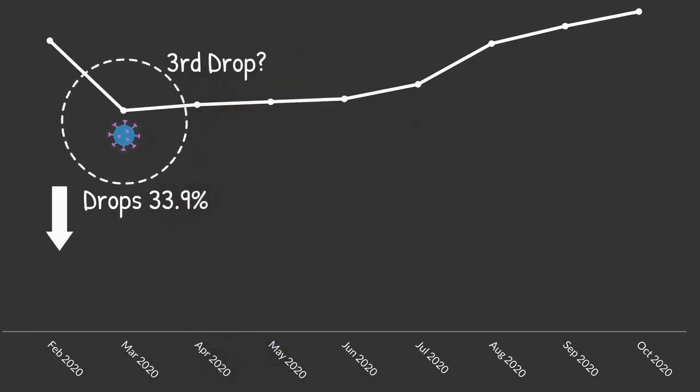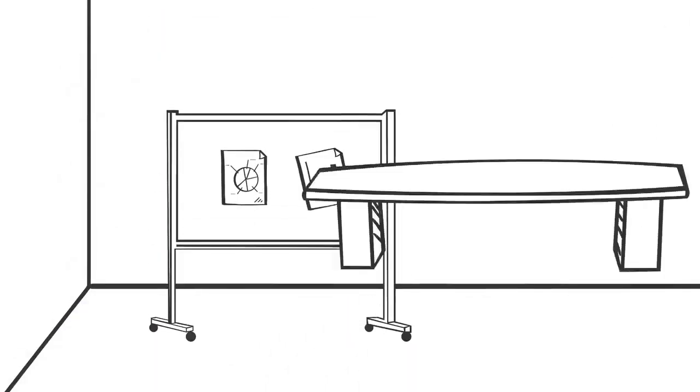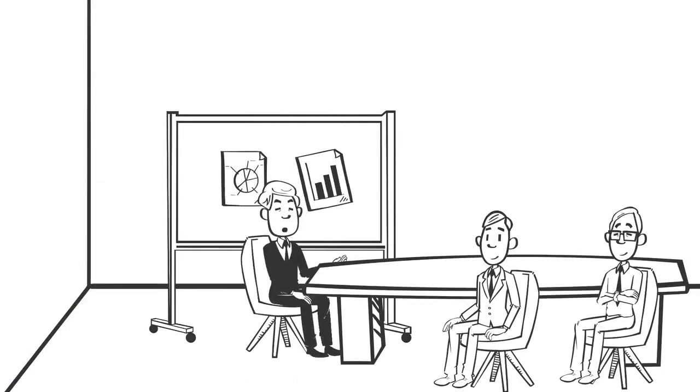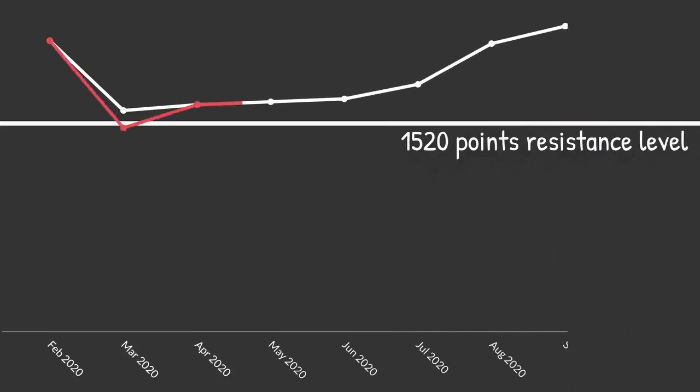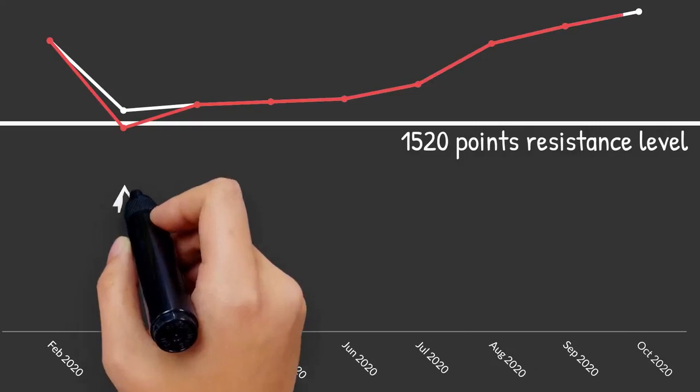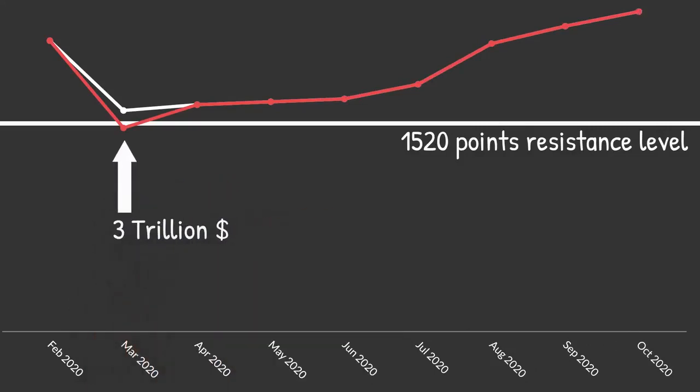So the question becomes, was this the third drop? Purists would say no, because in order for it to count as the third drop, the S&P 500 would have had to fall below the 1520-point resistance level. Others say that it was. They believe the drop in March would have broken through that previous resistance level, had it not been for the quick and superhuman efforts by the Fed and Congress in the form of the CARES Act and the $3 trillion in stimulus that artificially kept the market from breaking below that level.